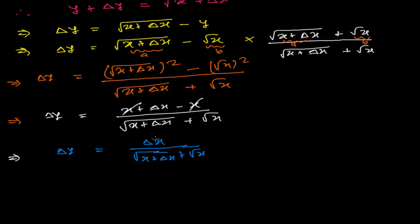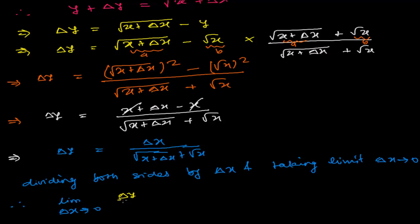Now I will divide both sides by delta x and take the limit as delta x tends to 0. So limit delta x tends to 0 of delta y over delta x equals limit delta x tends to 0.